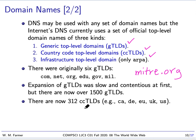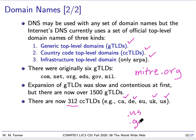In addition to generic top-level domains, there are country code top-level domains — there are 312 of them. These are codes for particular countries, like CA for Canada, DE for Germany, UK for the United Kingdom, US for the USA. EU is the country code for the European Union, even though the European Union is not technically a country. We're going to stop here and continue next time talking about where the World Wide Web came from.